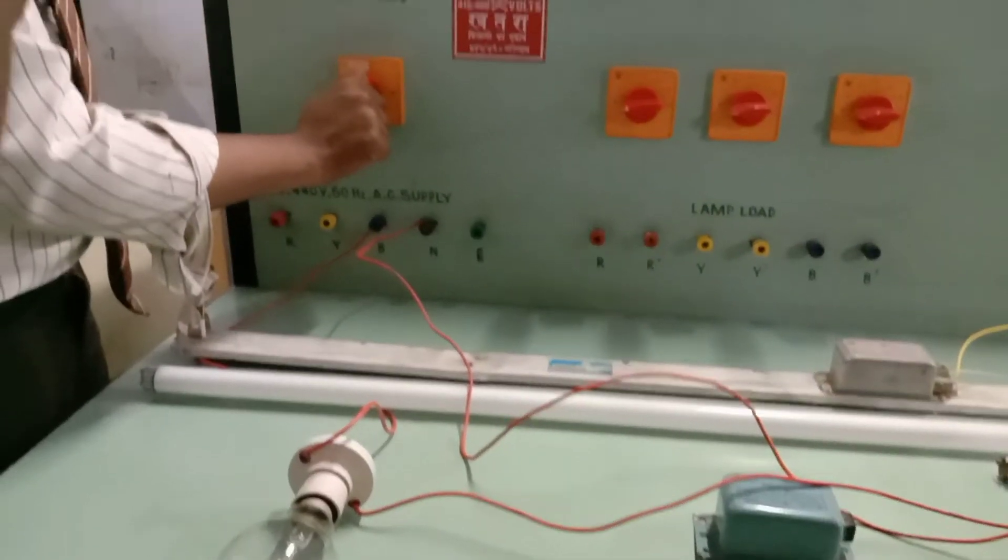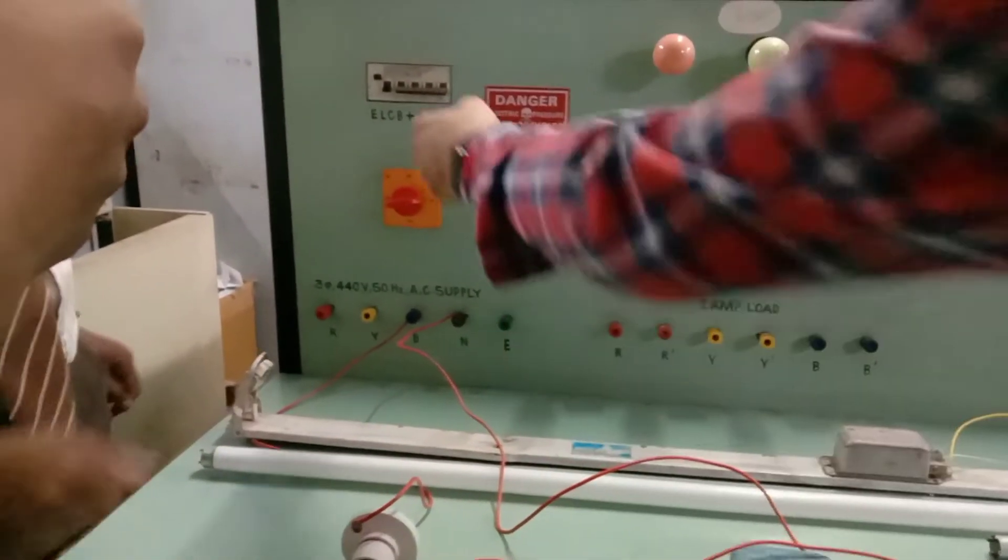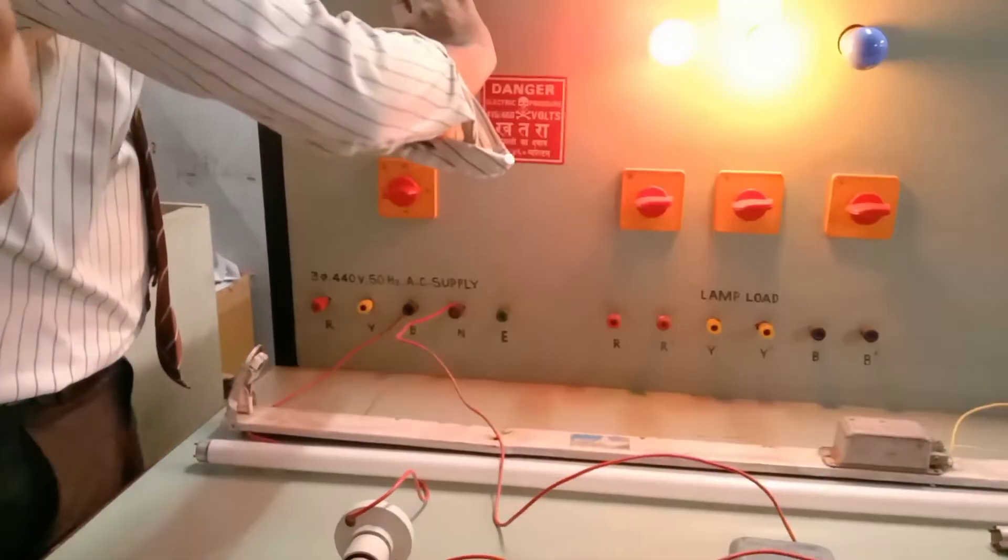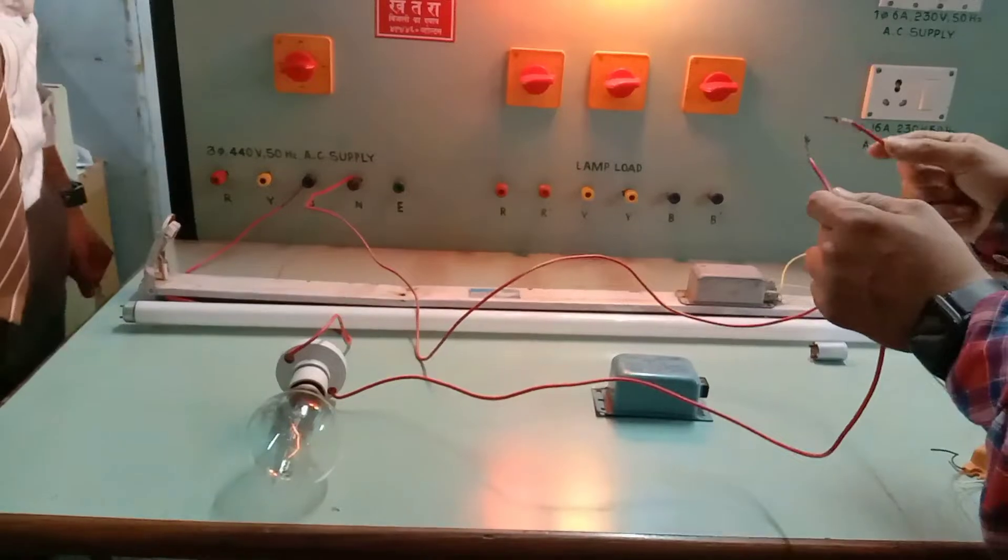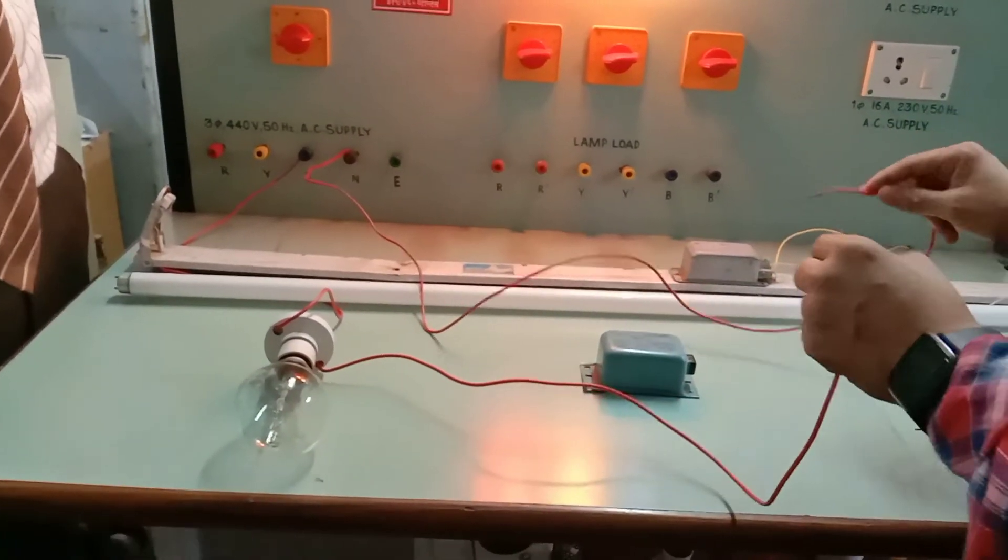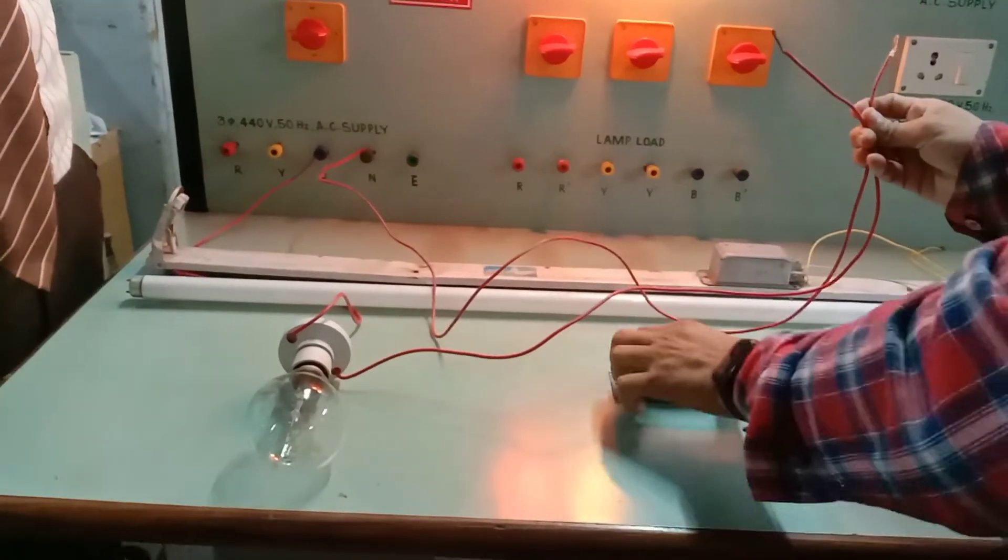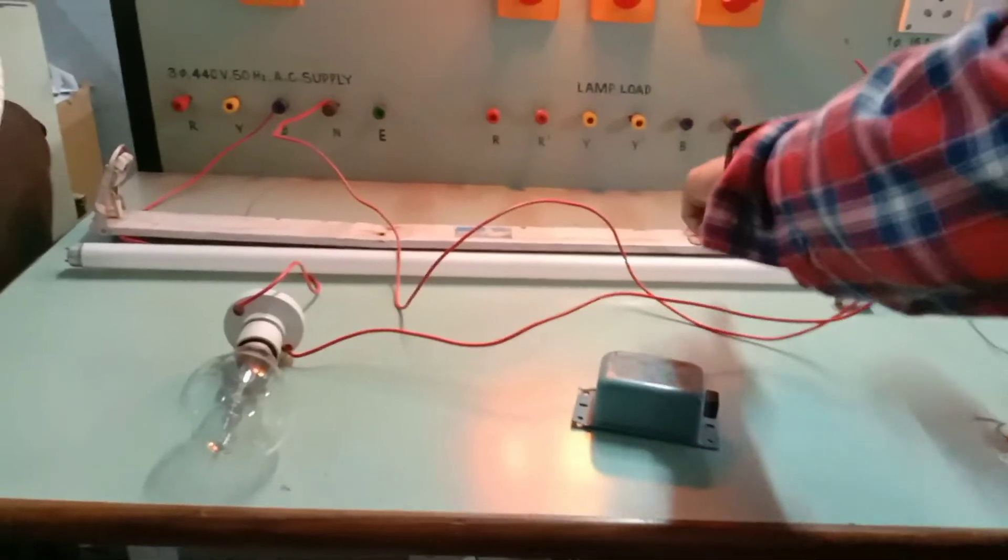Now I request the test lamp. Now supply is live. So here I have tested. The test lamp is working. So here we can test this choke. This is also where we are going to check.